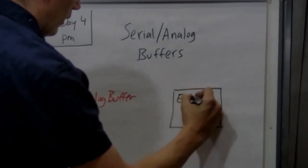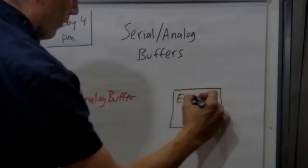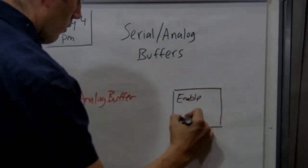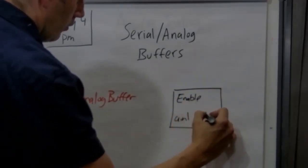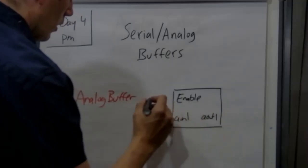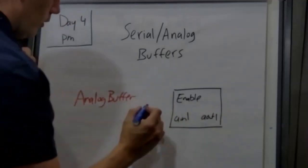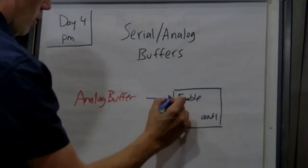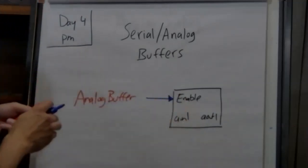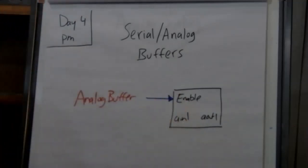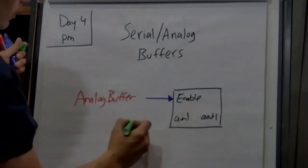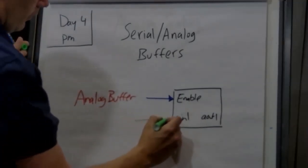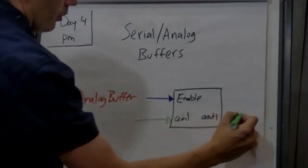So this looks a lot like a digital buffer, except it has an in one and an out one. The enable line is blue and it's filled in—you can't expand that. Now here's the trick: this buffer has a green input and output signal.